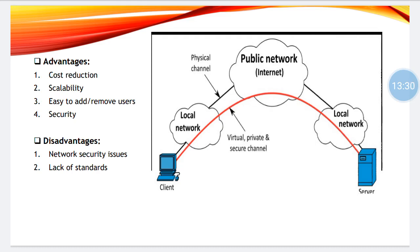But due to the security and tunneling, it appears as if the connection is directly from client to server — you can see the red line. Due to the appearance of a direct connection between client and server, its name is Virtual Private Network. Virtual means unreal — in reality, direct communication is not happening, but it is appearing to be direct. Hence it is called Virtual Private Network, and it is secured.